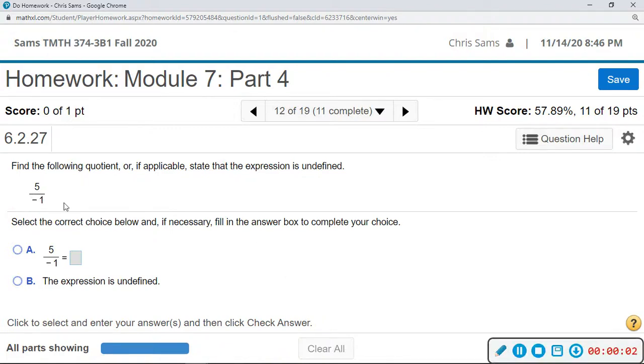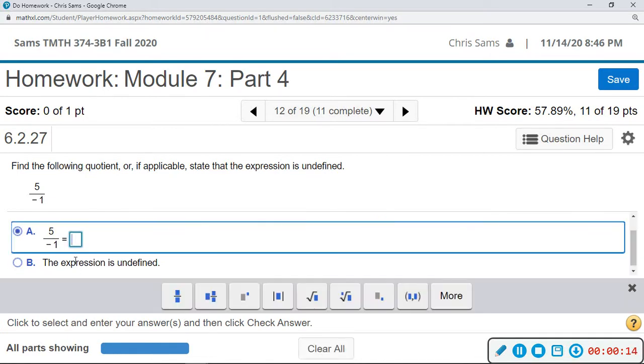All right, so just like we talked about with that tic-tac-toe diagram with the positives and negatives. Positive divided by negative, we'll get a negative answer. And anything divided by 1 is itself, so 5 divided by negative 1 will give us a negative 5.